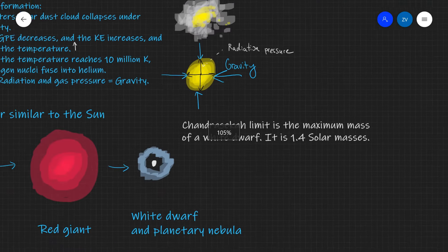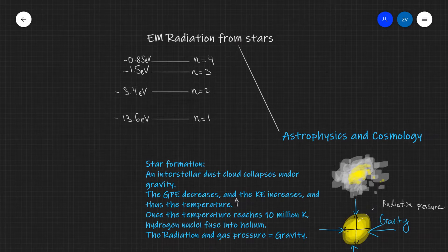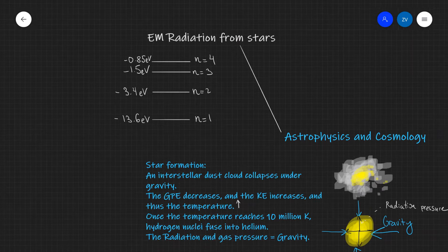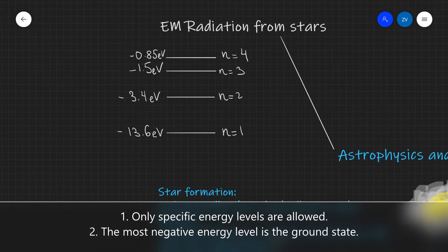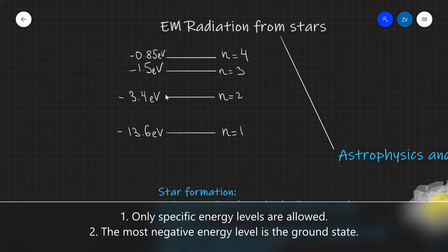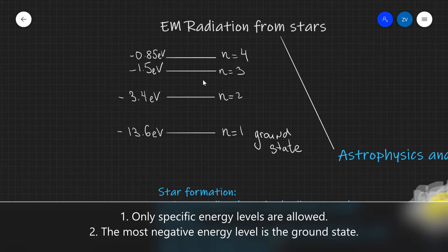Now let's revise EM radiation from stars. The first aspect is that electrons can occupy different energy levels within the atom and only certain energy levels are allowed. In the case of hydrogen, these are the first energy levels, and the electron can only occupy those specific energies and none of the energies in between. The most negative state is known as the ground state. If we keep inputting energy into electrons it will go up in energy levels until eventually it reaches zero and the electron is ionized — in other words it escapes the atom.